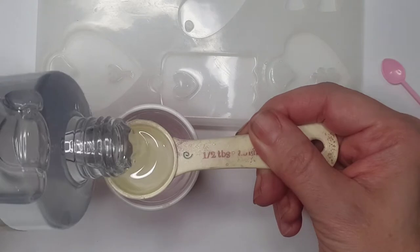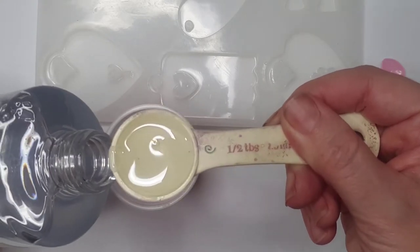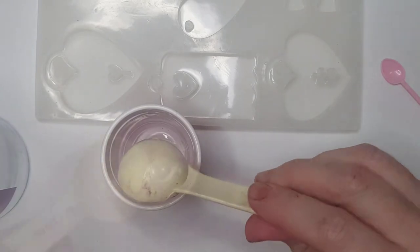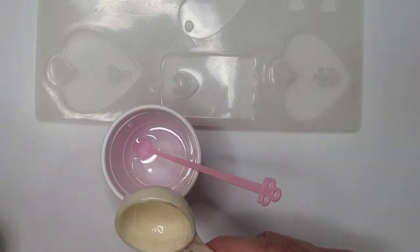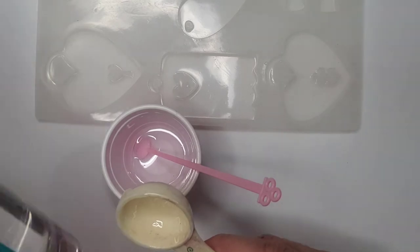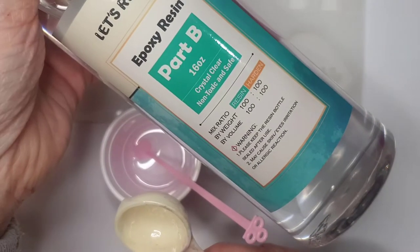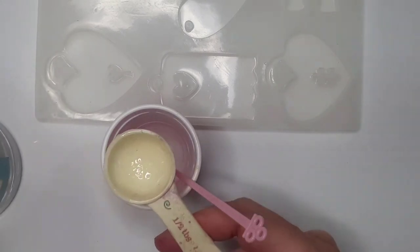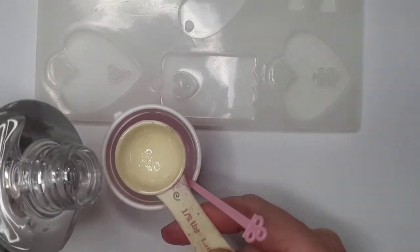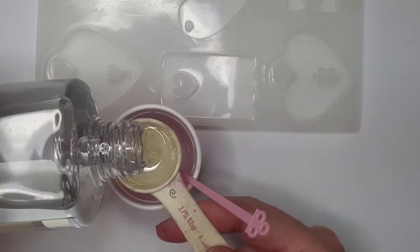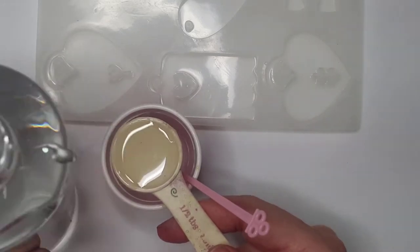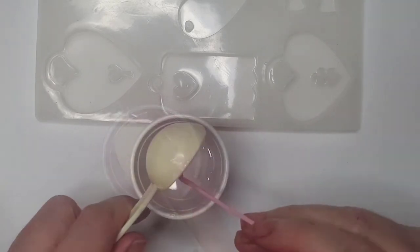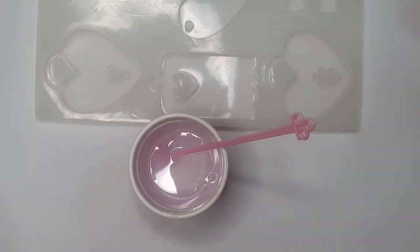The first thing I did when I got this resin was test it out. The pieces you saw at the start that were clear were me just trying the mold and resin together. As you can see, it's an epoxy one-to-one ratio, which means you use the same amount of part A and part B mixed together to create your resin. I found it was really easy to make glassy, bubble-free resin with the Let's Resin resin.